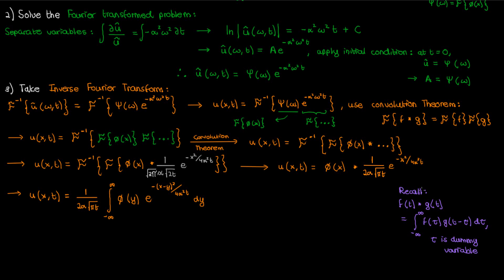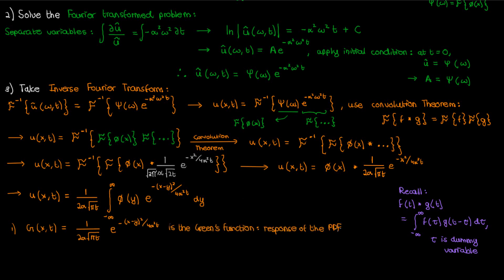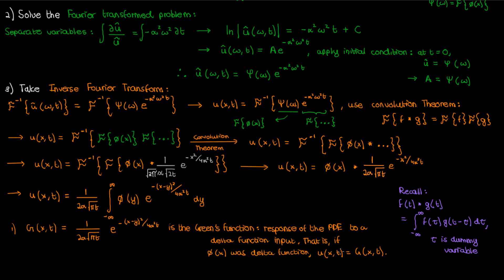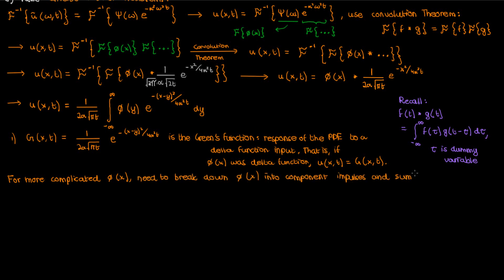There are a couple of important points to mention. First, the function g(x,t) — the exponential term multiplying φ in the integral along with the constant out front — is called the Green's function. The Green's function describes how the PDE responds to a delta function input, i.e., an impulse input. So if the initial condition φ(x) were a delta function, u of x,t would equal the Green's function. For a more complex input one would break it into impulses and integrate g against that complex input to find the response u — which is exactly what the convolution does. For more details check out my videos on Green's functions, links in the description.